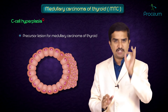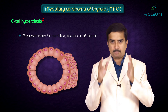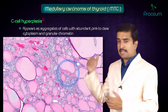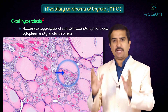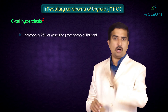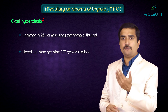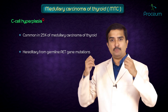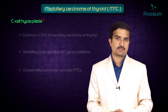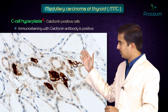C cell hyperplasia is a precursor lesion for medullary thyroid carcinoma. It appears as aggregates of cells with abundant pink to clear cytoplasm and granular chromatin. It is common in 25% of medullary thyroid carcinomas and arises from hereditary germline RET gene mutations. It is occasionally observed in sporadic medullary thyroid carcinomas. Immunostaining with calcitonin antibody is positive.